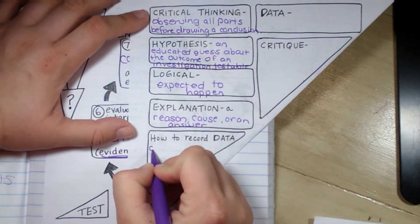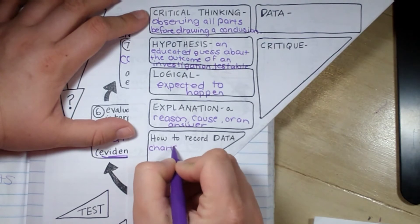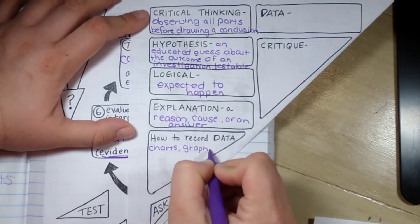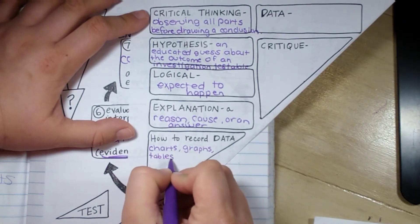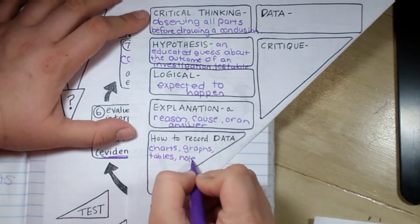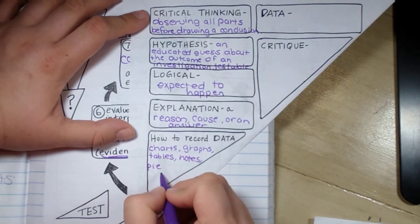Ways that we can record our data are charts, graphs, tables, notes, pie charts. Ways to represent our data.